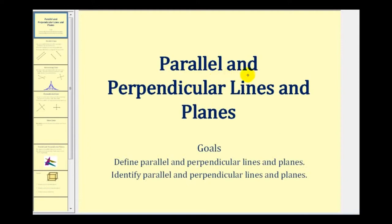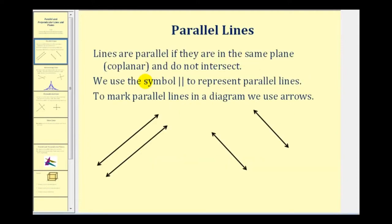Welcome to a lesson on parallel and perpendicular lines and planes. Lines are parallel if they are in the same plane, or coplanar, and do not intersect. Here we see two sets of parallel lines, and we can use this symbol with two vertical bars to represent parallel lines.